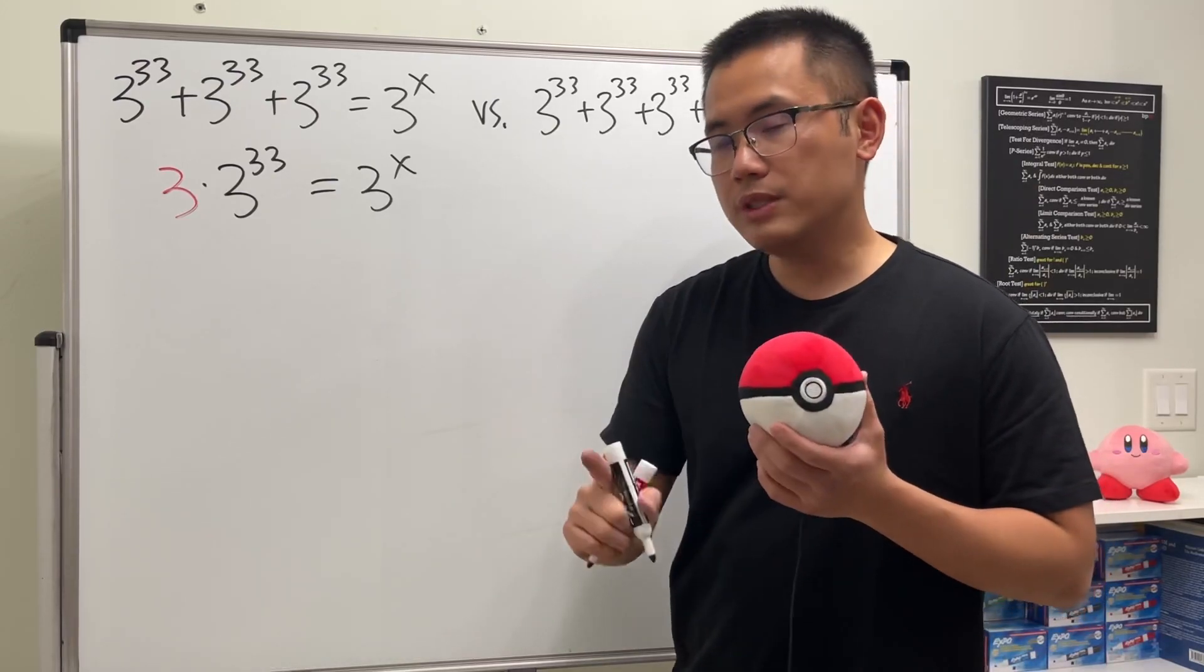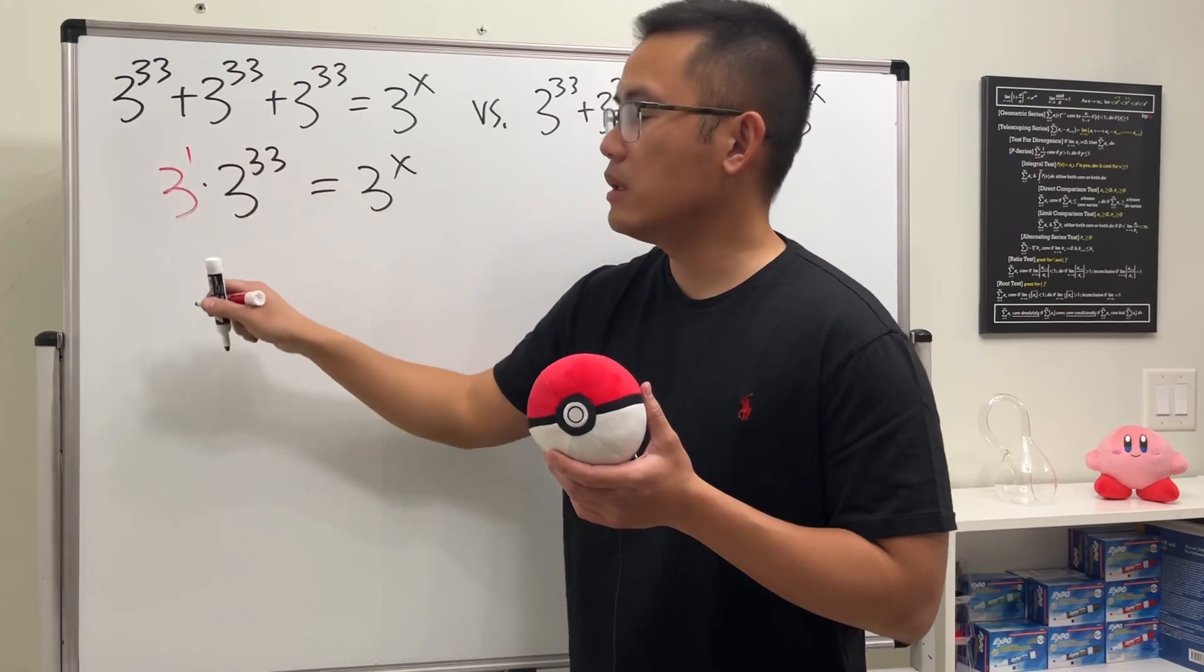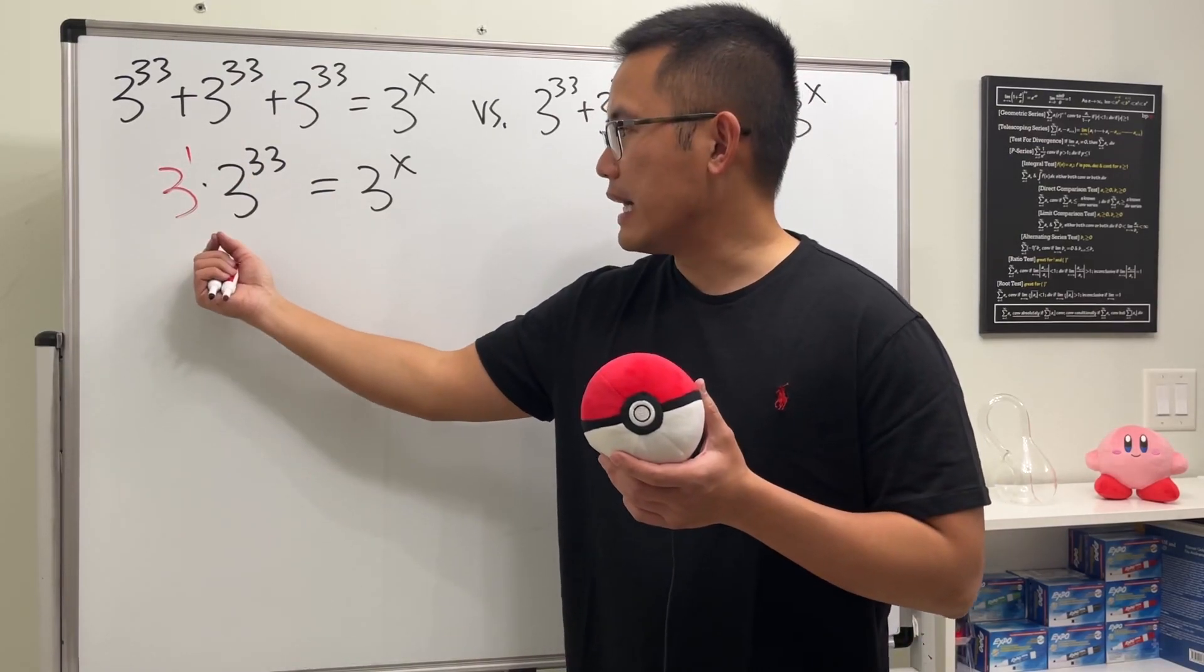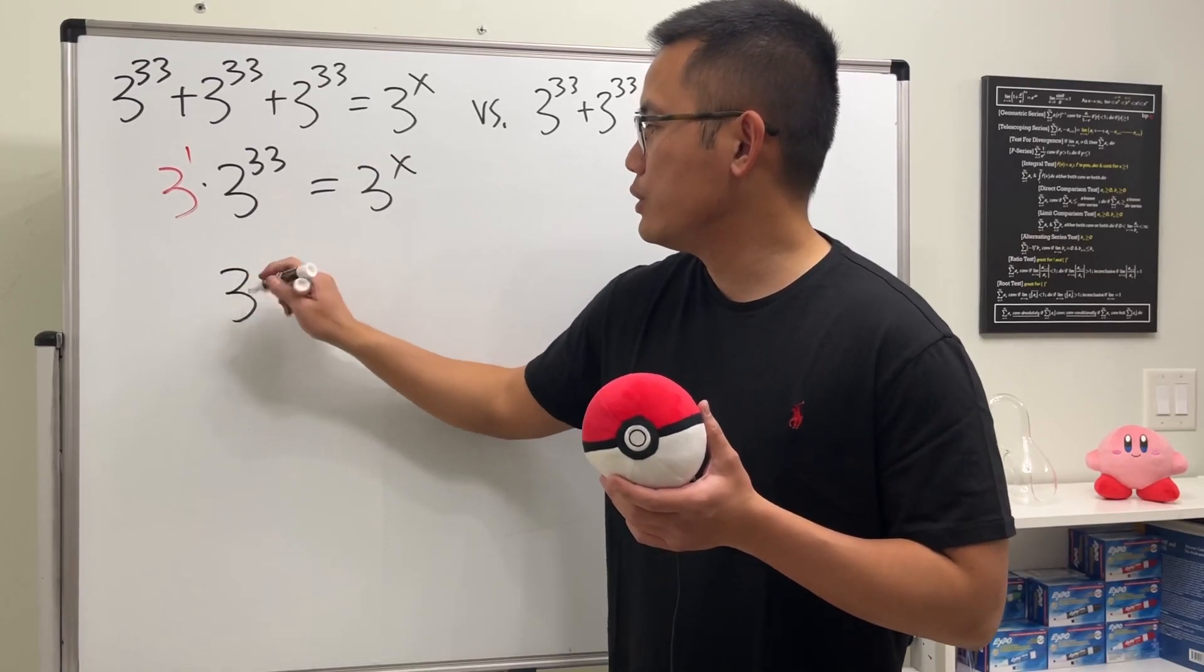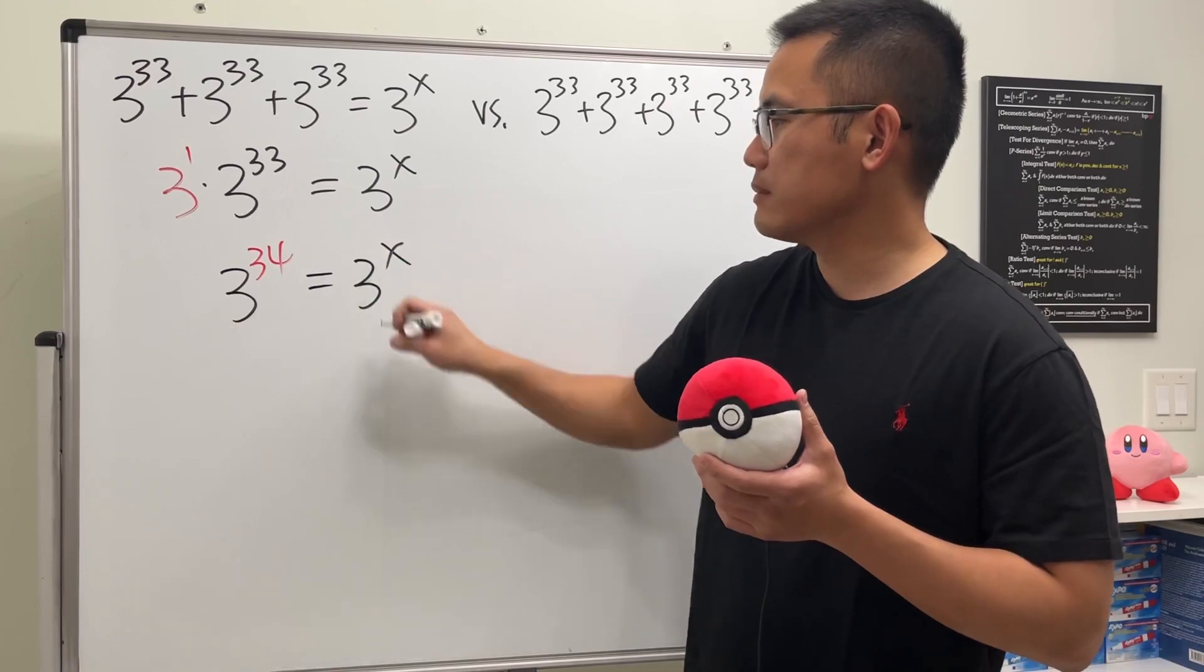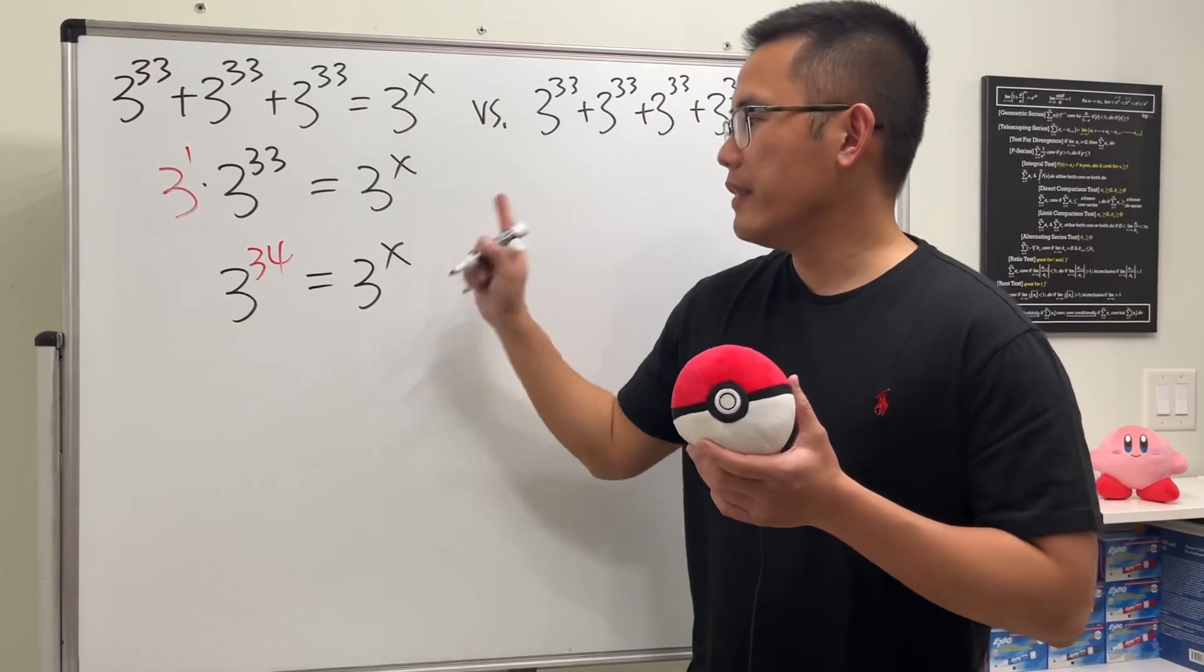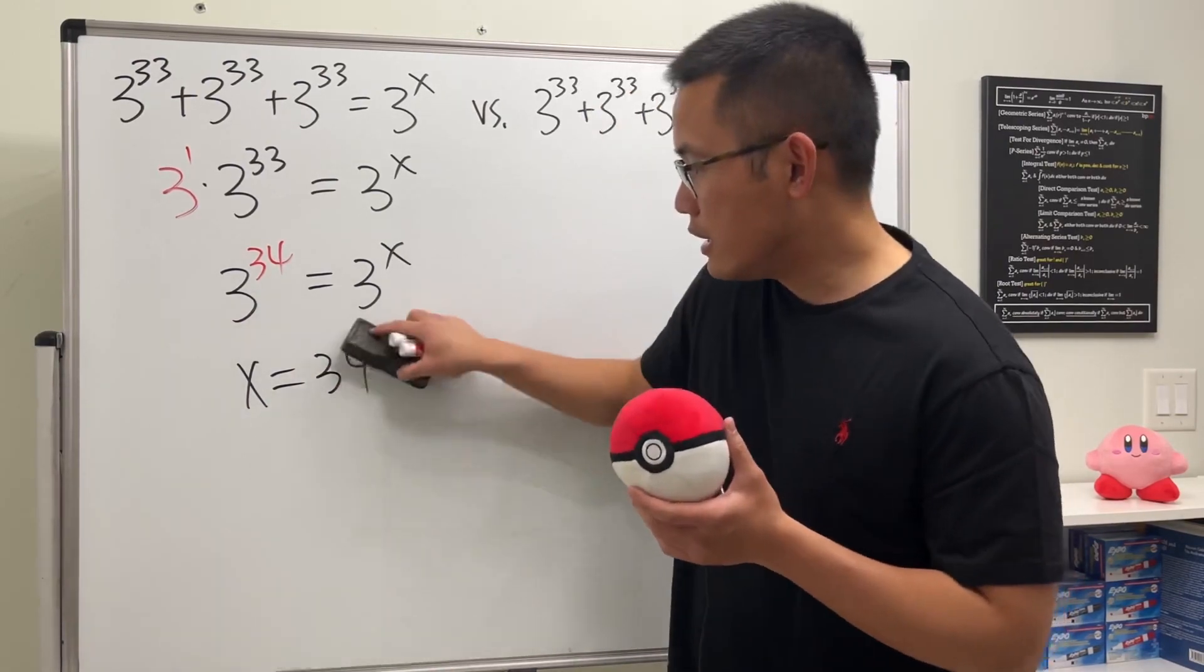When we multiply, we just add the powers, so this is equal to 3^34, and that equals 3^x. Well, the bases are the same, so x is just equal to 34. And guess what? We are done. That's it.